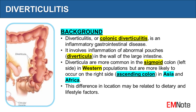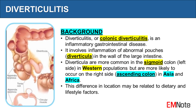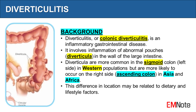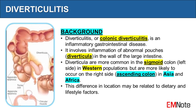Diverticulitis, or colonic diverticulitis, is an inflammatory gastrointestinal disease. It involves inflammation of abnormal pouches, called diverticula, in the wall of the large intestine. Diverticula are more common in the sigmoid colon on the left side in western populations, but are more likely to occur on the right side, in the ascending colon, in Asia and Africa. This difference in location may be related to dietary and lifestyle factors.